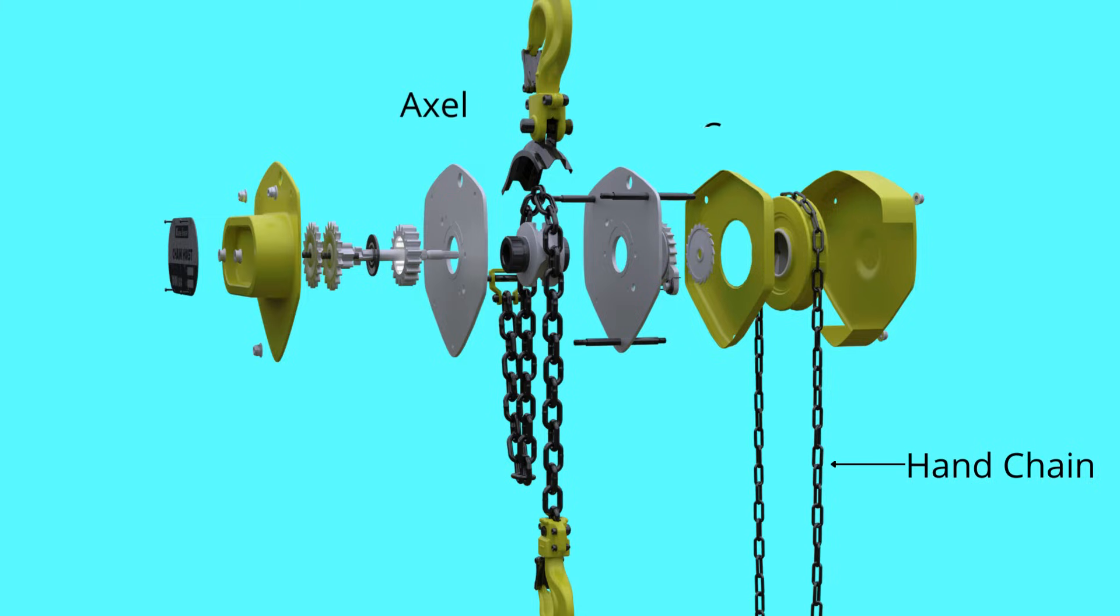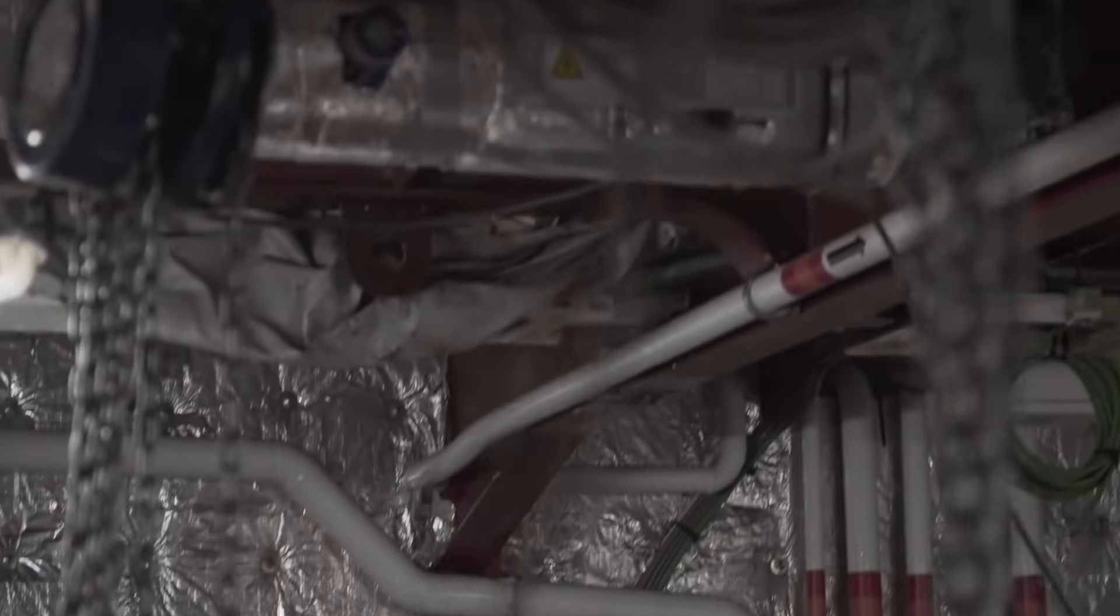When the hand chain is pulled, it turns the cog and axle, which goes through the lifting mechanism. The cog turns the drive shaft and the gears turn the load chain sprocket. This rotates the load chain that is looped over the load chain sprocket and lifts a load.